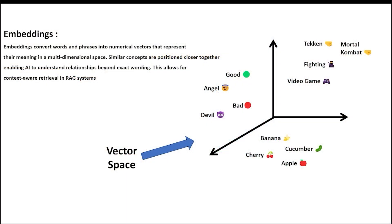What are embeddings? At a high level, embeddings are a way to convert text into numbers — not just any numbers. These numbers, or vectors, represent the meaning of words and sentences in a way that allows a computer to understand relationships between them. For example, words like Tekken and Mortal Kombat would be placed close together in a multidimensional space because they share similar meanings as fighting genre video games. Words like angel and devil would also be nearby, while something unrelated like banana would be far away. So instead of comparing words letter by letter, embeddings allow us to compare their meanings mathematically.